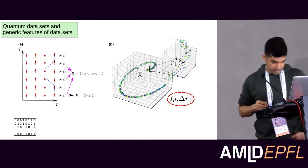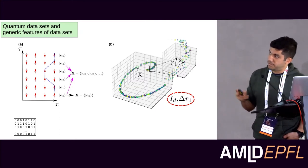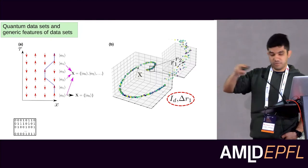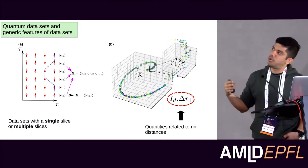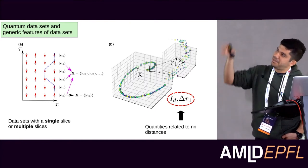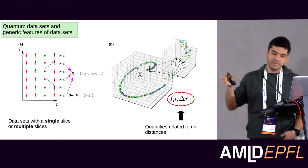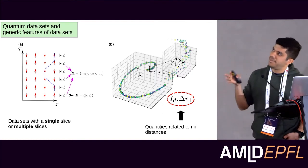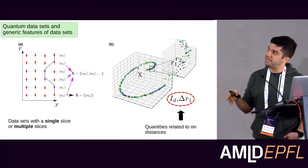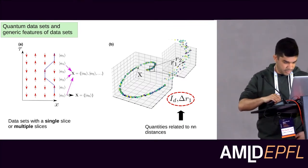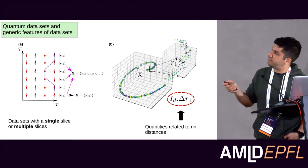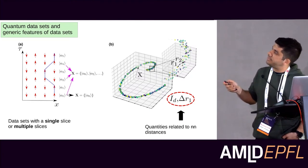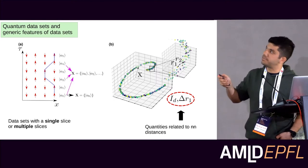We define two kinds of data sets: one containing a single slice of the path integral, and another containing multiple slices in the tau direction — scaled as beta times the number of particles. We then study two features: the intrinsic dimension, and a quantity called delta-one related to the statistics of distances in configuration space — specifically the variance of the distance distribution.